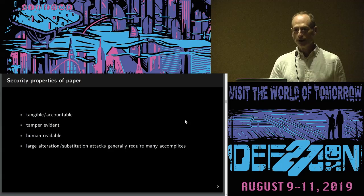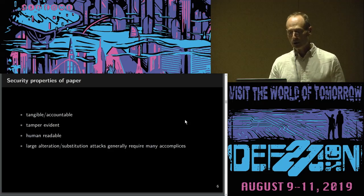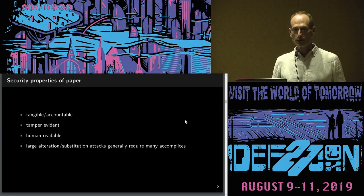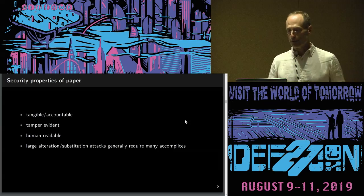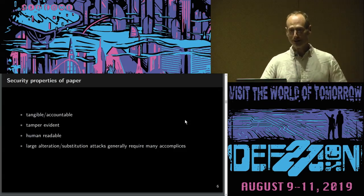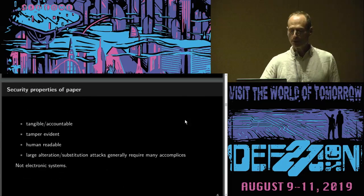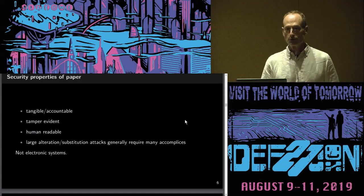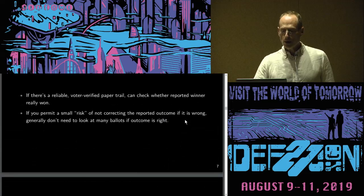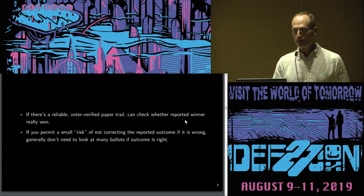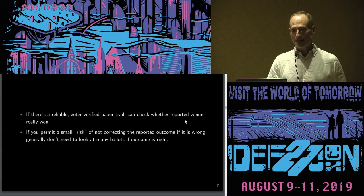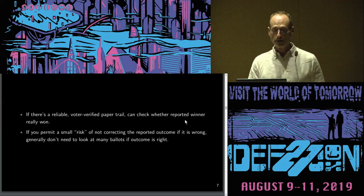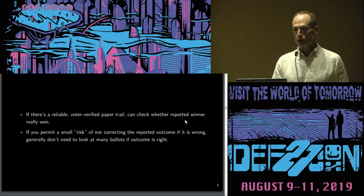Paper is tangible, you can count it, you can keep track of it, it's tamper evident, it's human readable. If you want to alter a lot of it, it's not one person sitting at a keyboard — you need many accomplices on the ground. So that makes it harder to hack a paper-based system. If we have a reliable voter-verified paper trail, there's a way to check whether the reported winner really won, even if calculating the reported winner involved a lot of technology, software, and people.